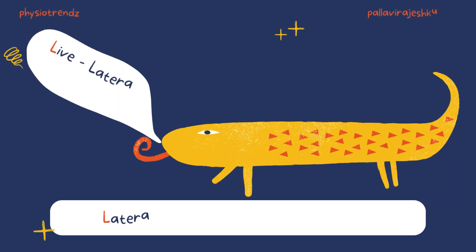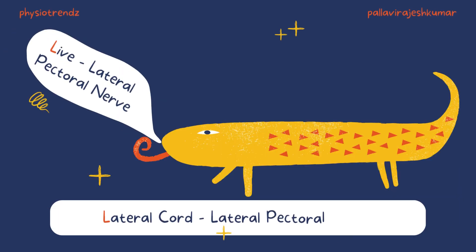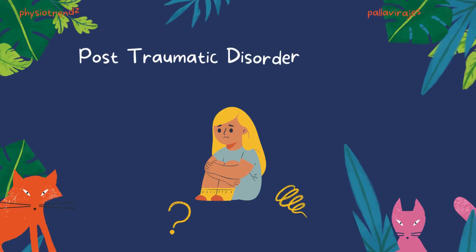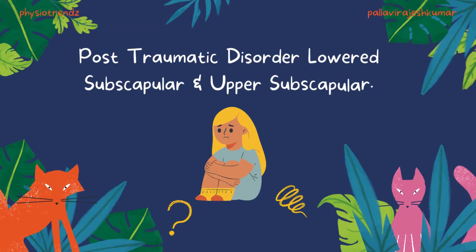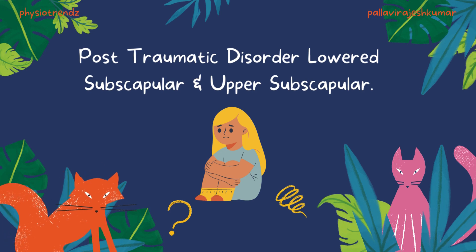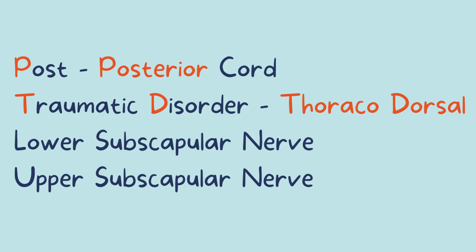D — lateral pectoral nerve — L for lateral cord. Post: traumatic disorder, lower subscapular and upper subscapular. Post is for the posterior cord; D stands for thoracodorsal nerve.